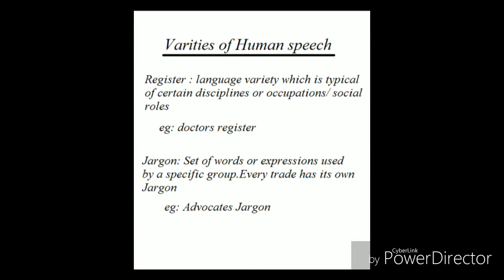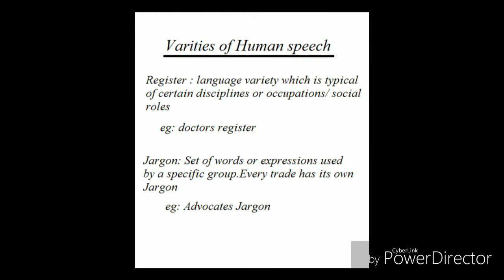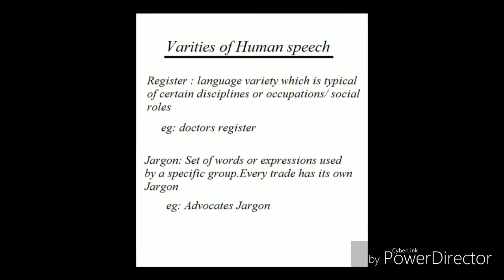The next variety is jargon. A set of words or expressions used by a specific group is called jargon. For example, there is teacher's jargon or advocate's jargon. Terms like 'rapport,' 'interactivity,' and 'prerequisites,' which a teacher uses with fellow teachers, are not understandable by a person outside that profession. That is what jargon is — a set of words or expressions used by a specific group.